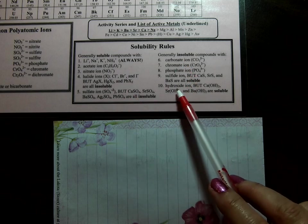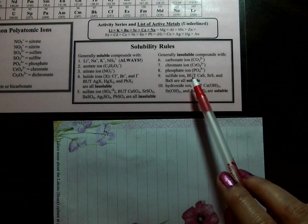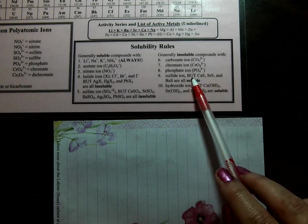6, 7, 8, 9, 10 are generally for insoluble compounds, again, unless there is an exception, which is the word but.